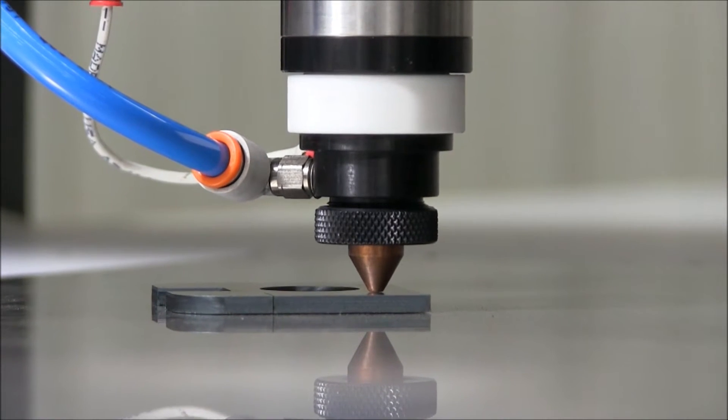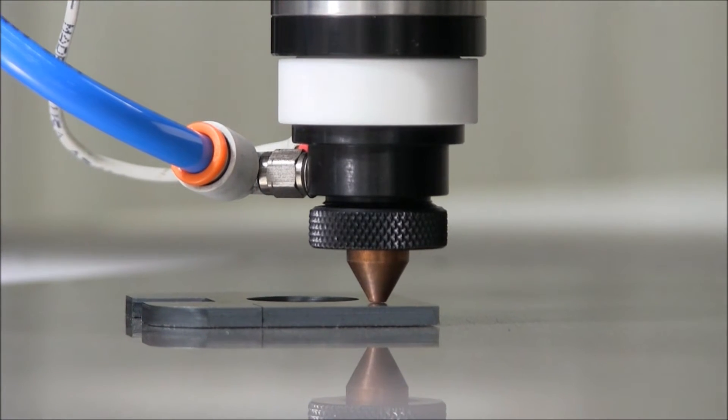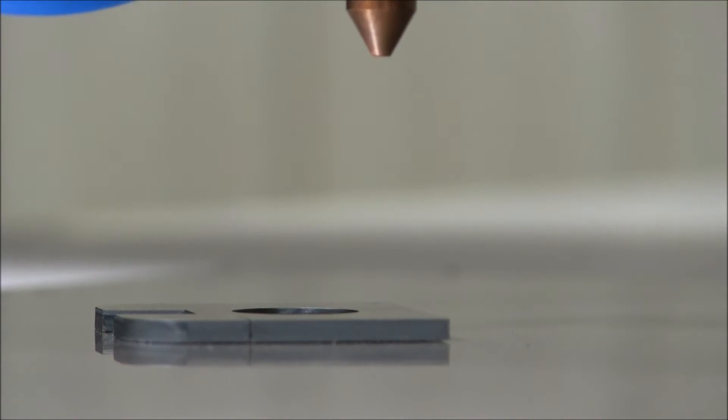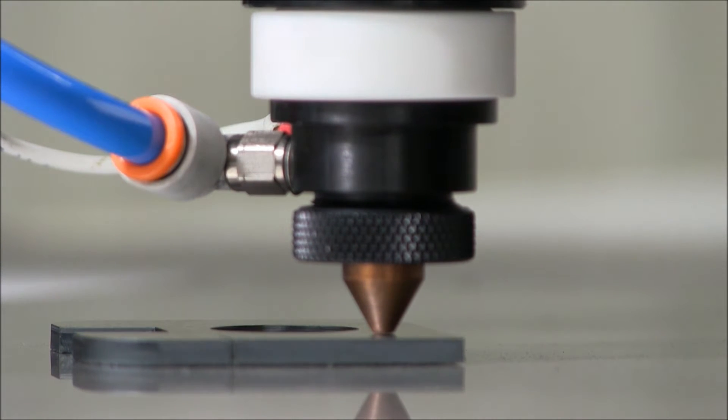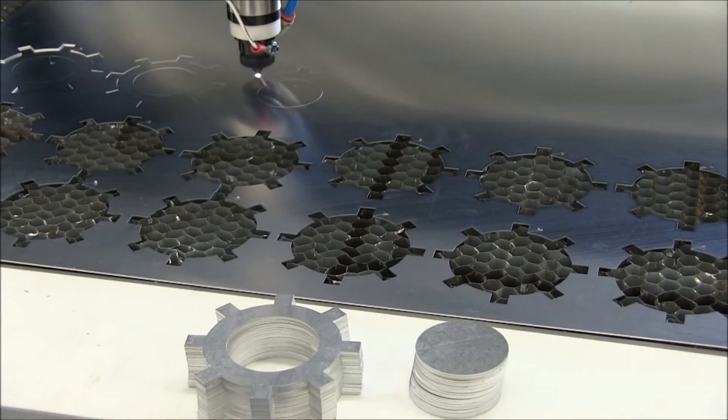The cutting head is controlled by a capacitance sensor and Z-axis motor. The gap between the metal being cut and the cutting nozzle can be adjusted until the desired beam focus is obtained.